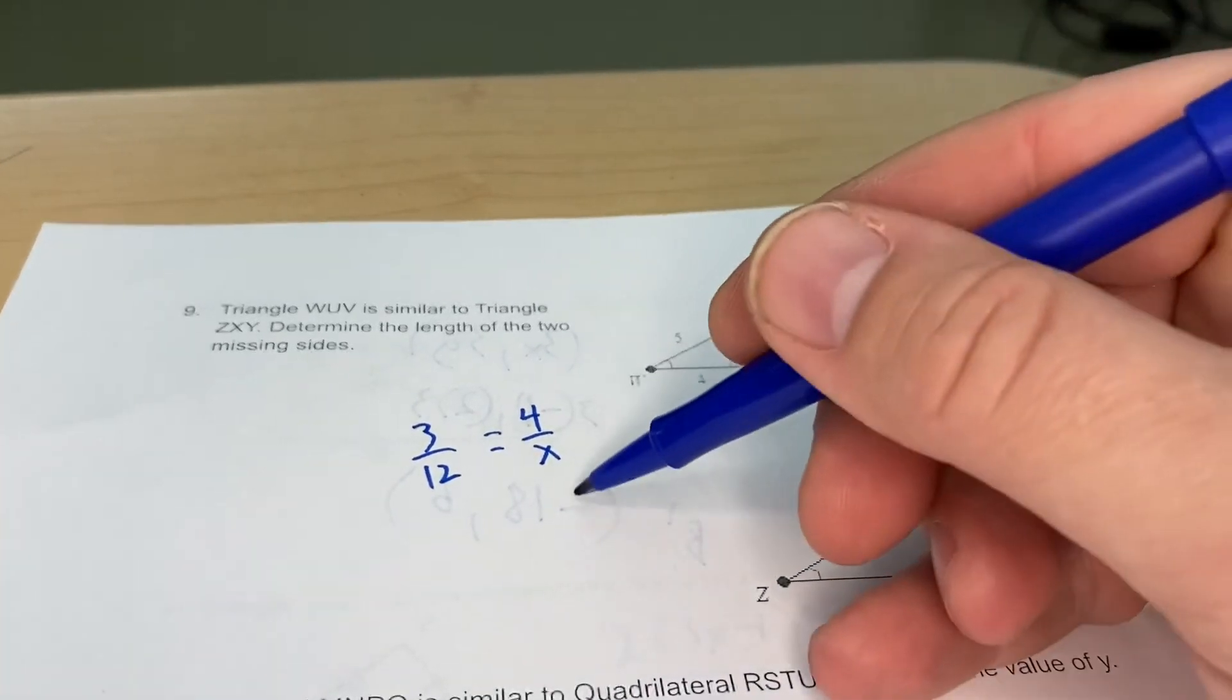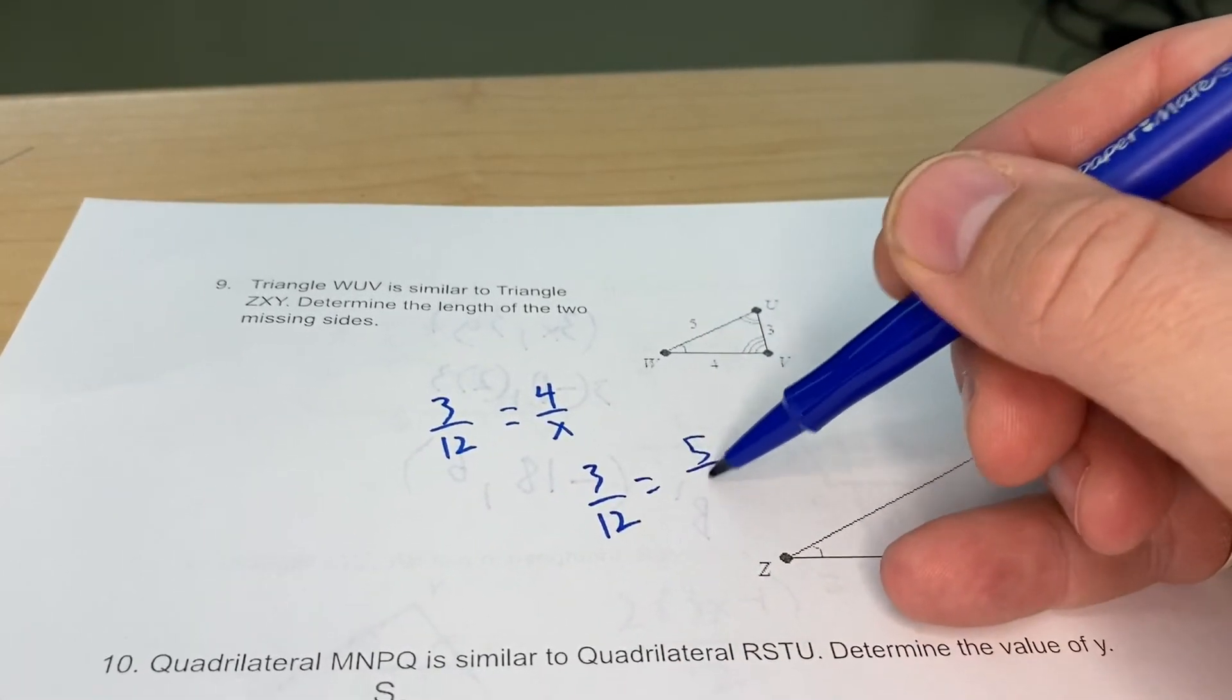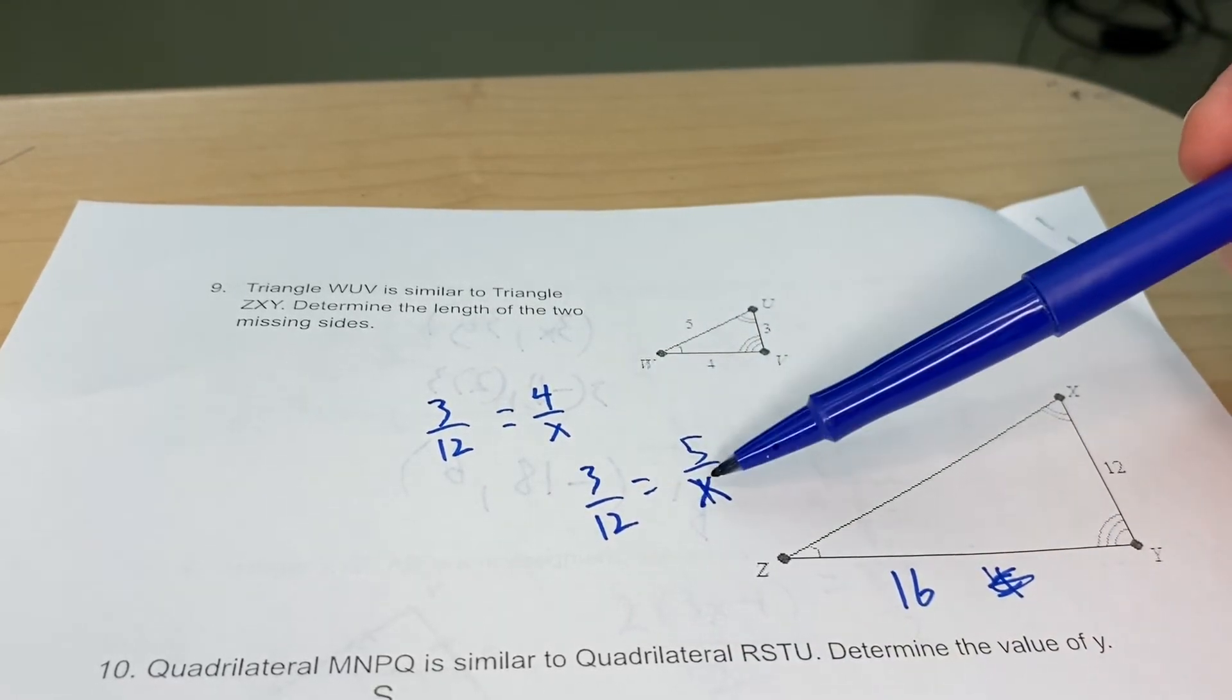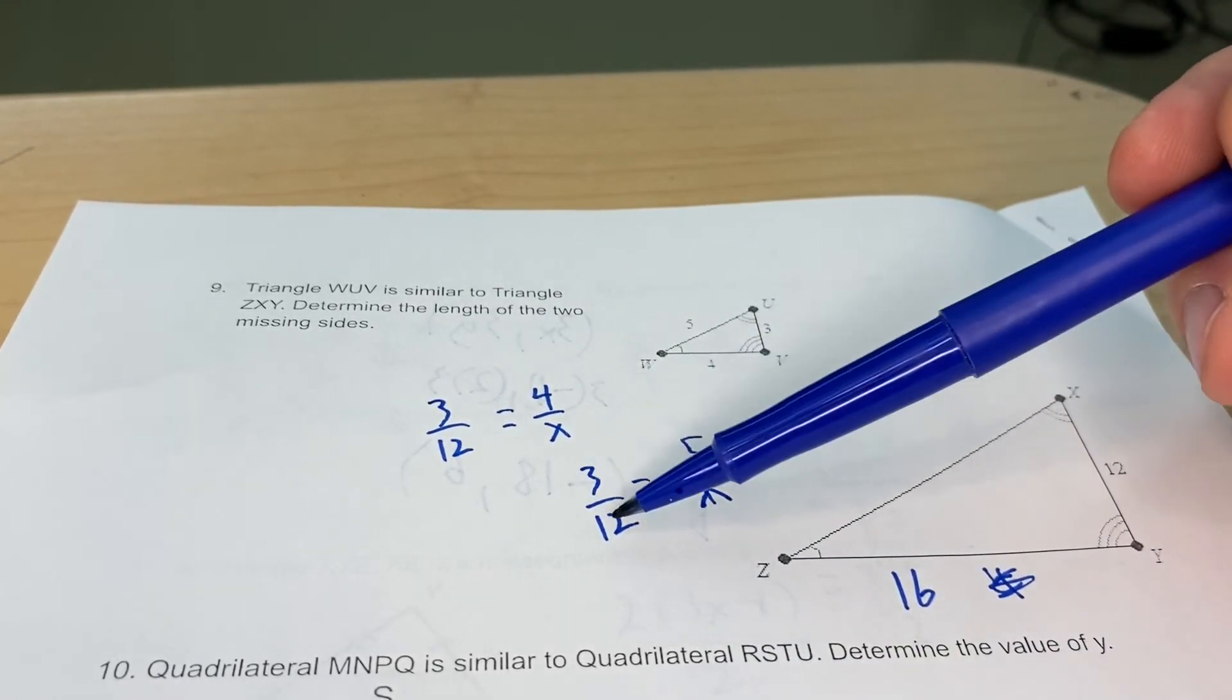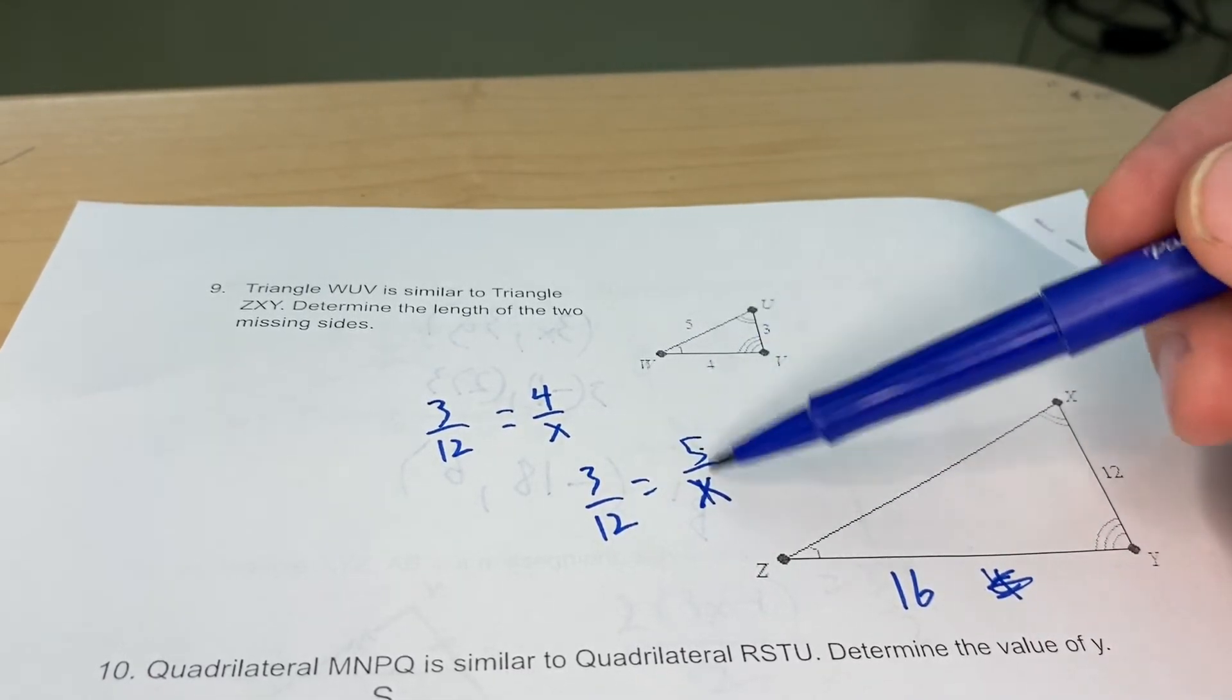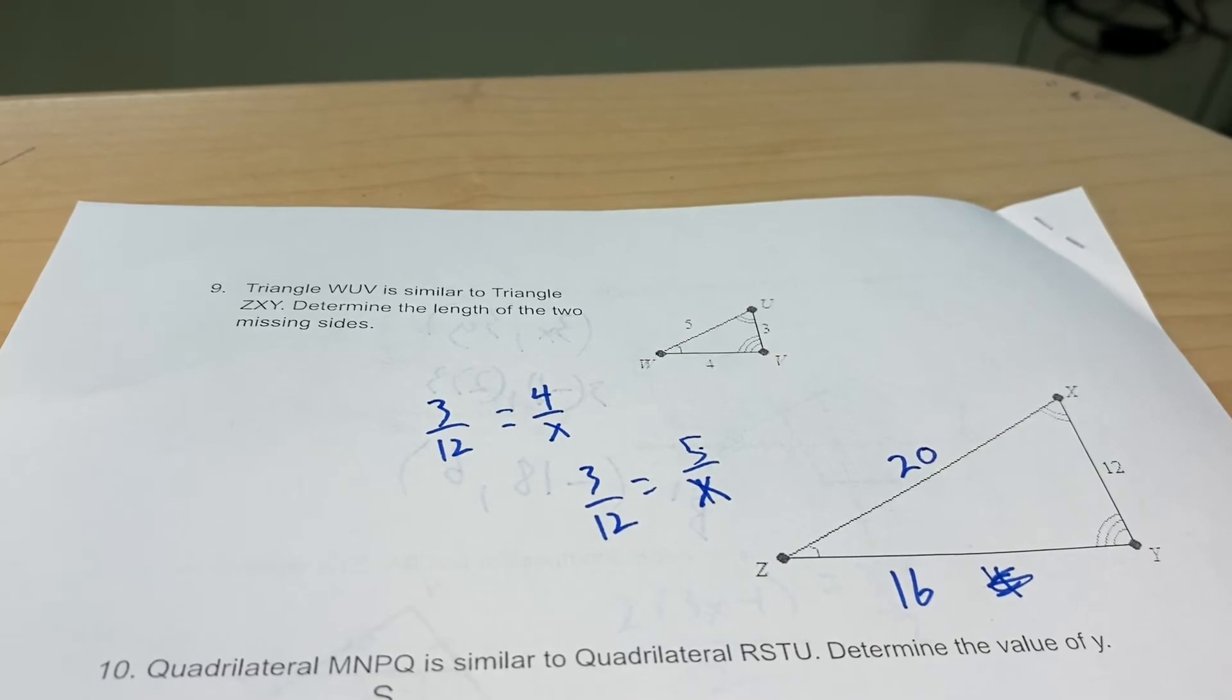And then down here again, 3 is to 12 as 5 is to x. And I can think of this as proportions. This is going to match up the exact same way. 3 times 4 makes 12, so 5 times 4 makes 20. Interestingly enough, if you didn't know this, these are right triangles and these are Pythagorean triples.